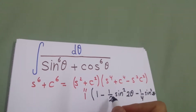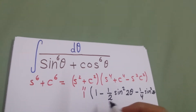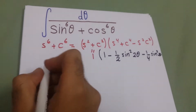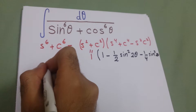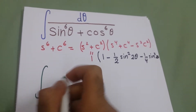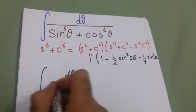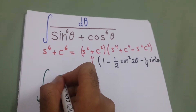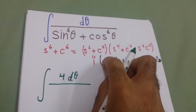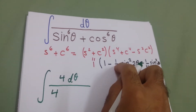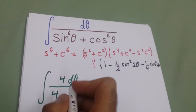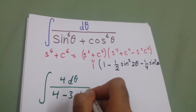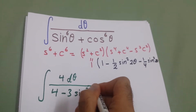So we have minus one-half and minus one-quarter, giving minus three-quarters. The integral becomes the integral of dθ, and multiplying through by 4 over 4, we get 4 minus 3·sin²(2θ) in the denominator.